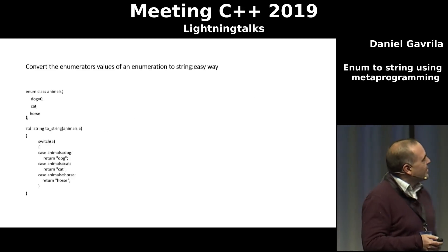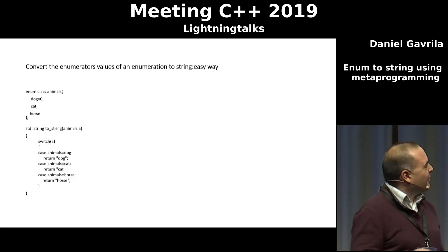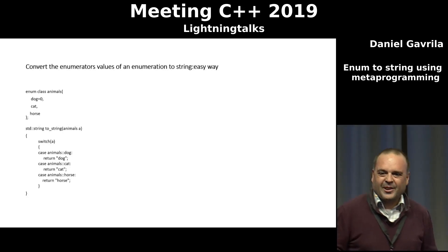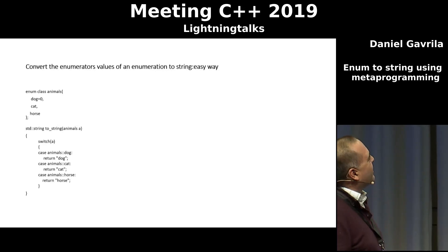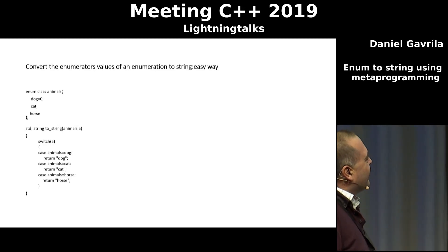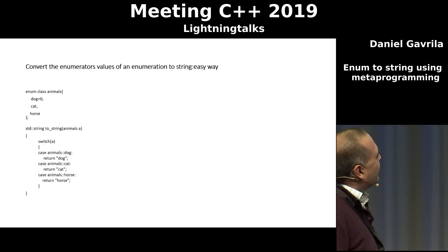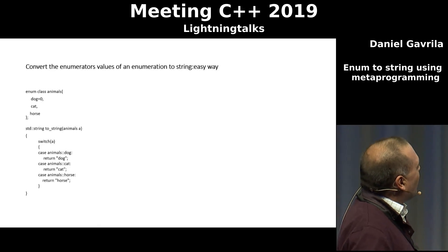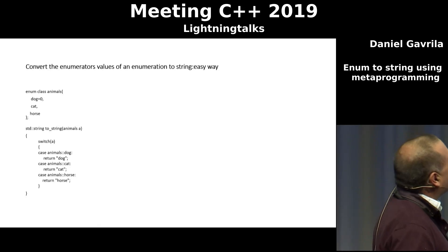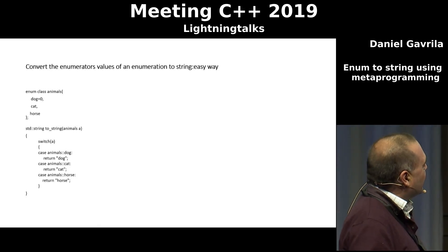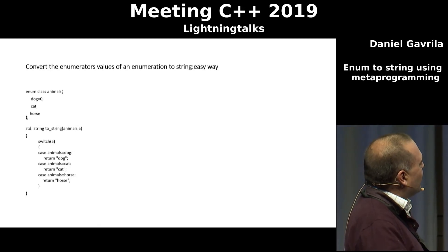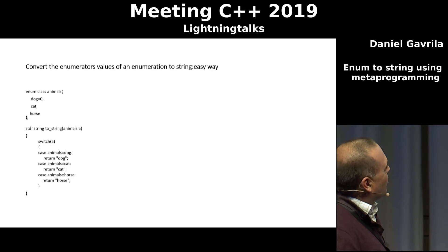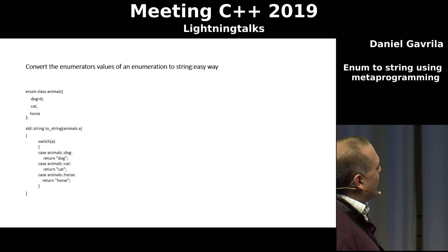So let's start easy. I'm tired, sorry — I think everyone is tired after two days of C++ talks. So what I have here is an enum class with three enumerators: animals with dog, cat, and horse, and I would like to convert these enumerators to a string.